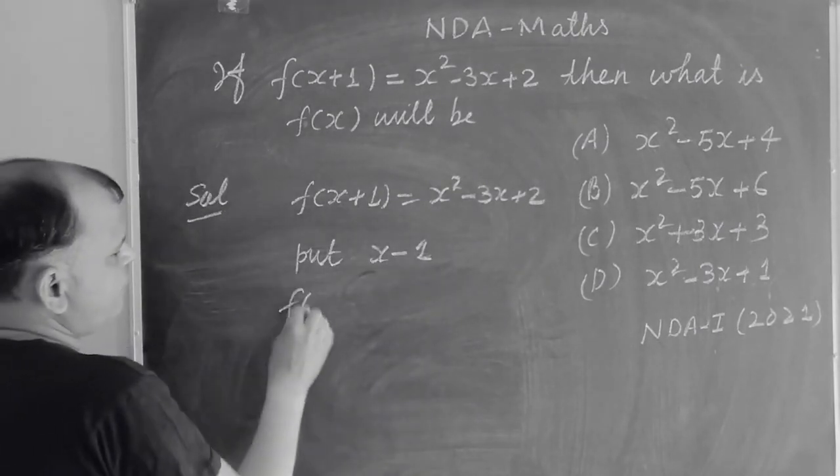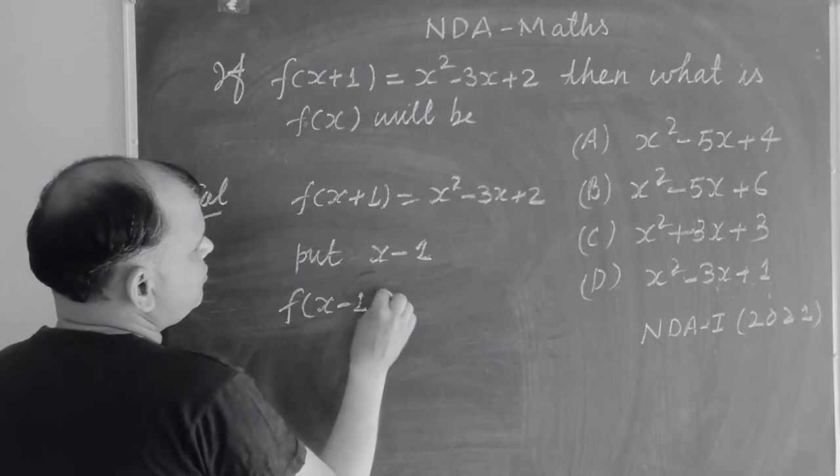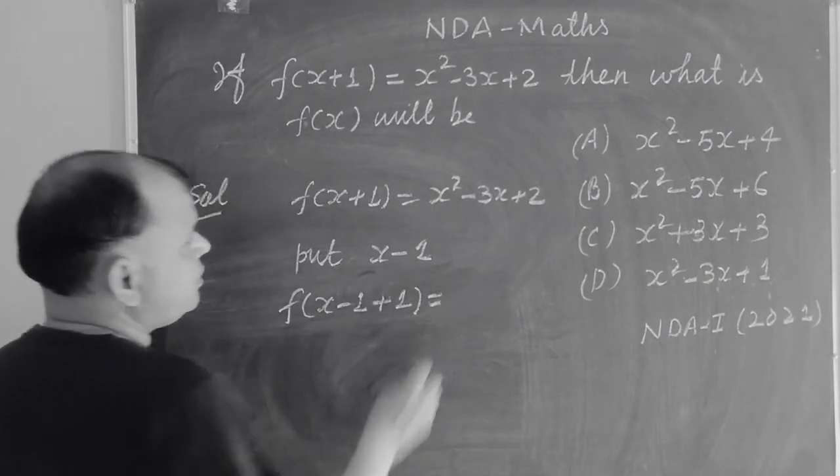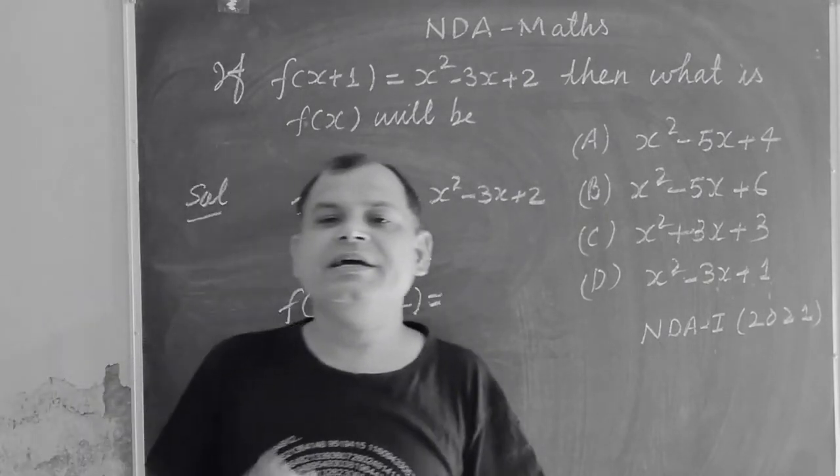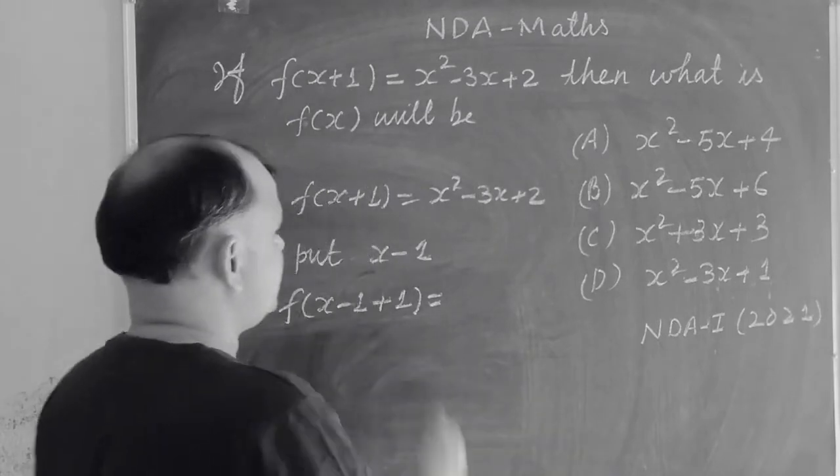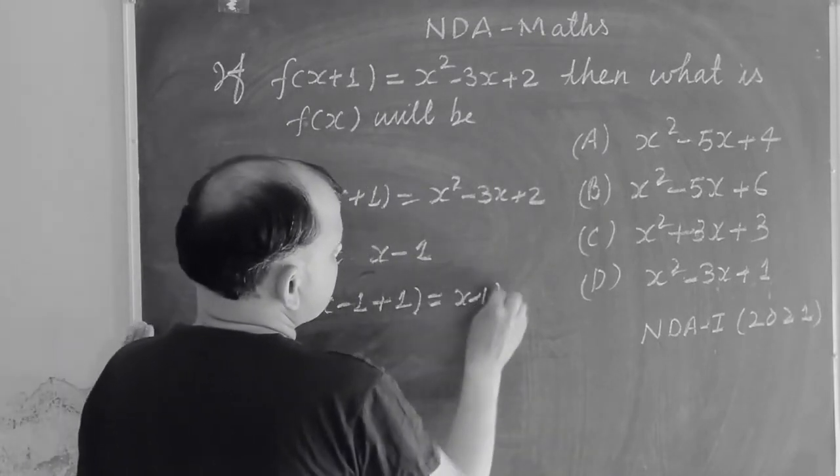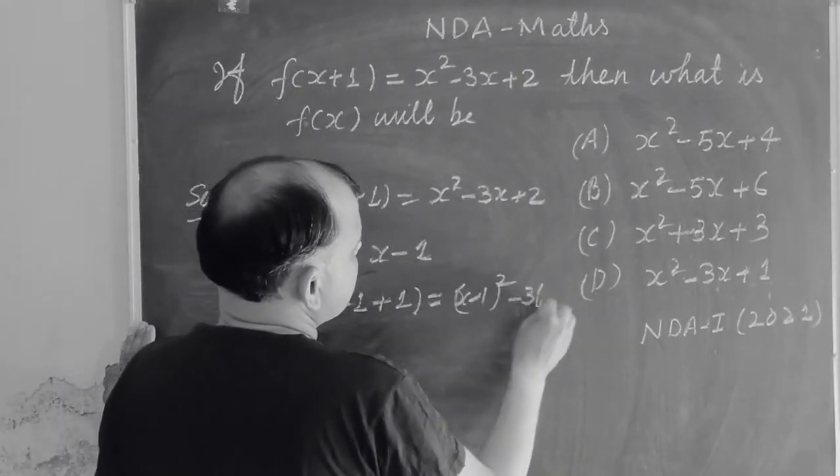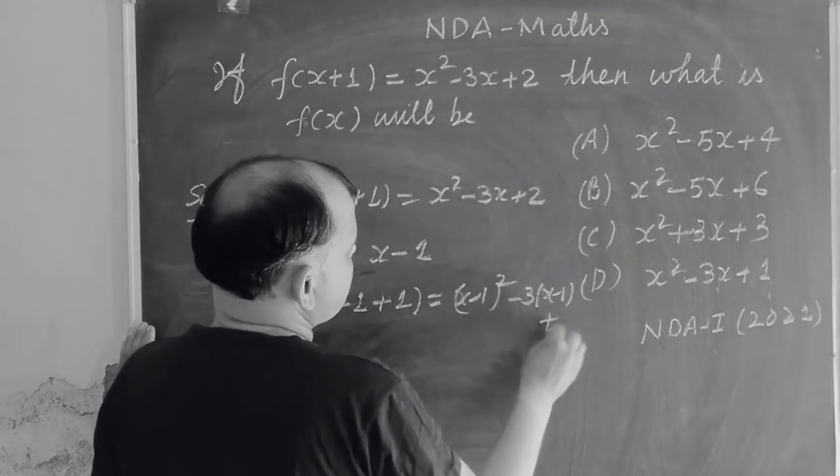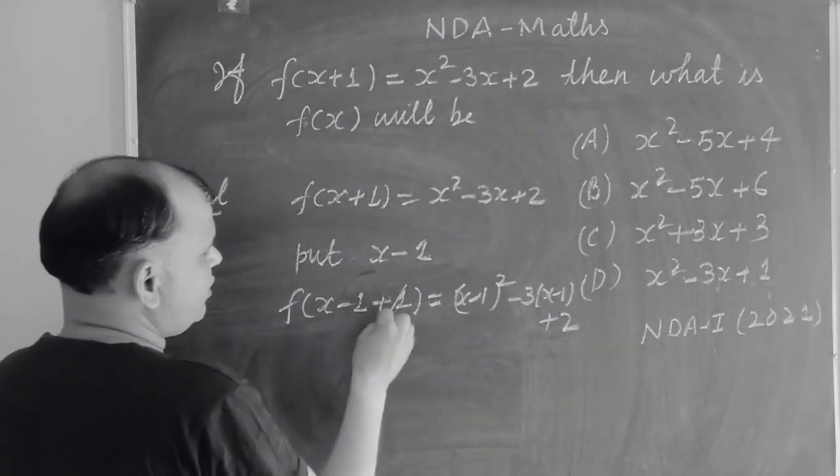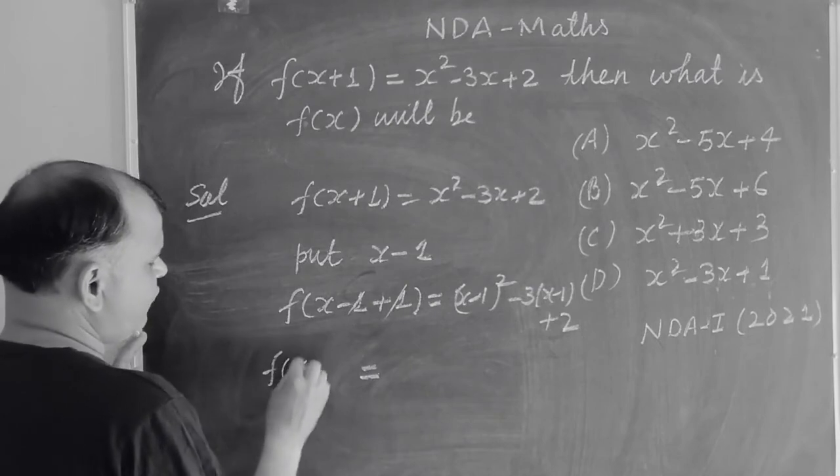So f((x-1)+1). Jahaan x hai, wahaan par x minus 1 humme put karna hai. So (x-1)² minus 3 times (x-1) plus 2. Here the ones cancel, so we get f(x).